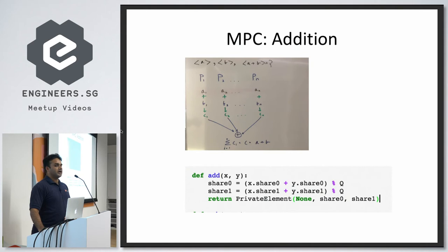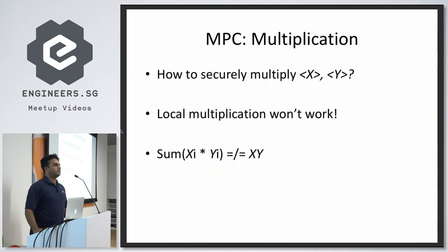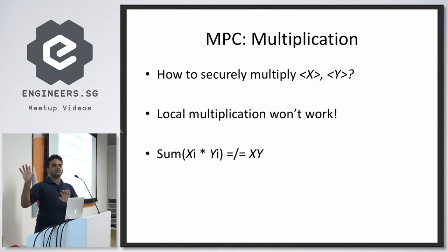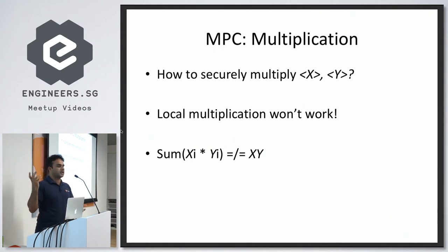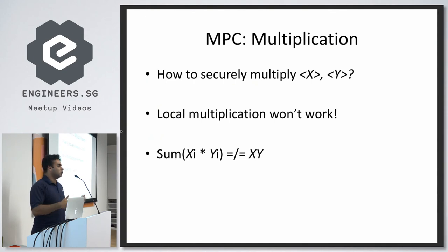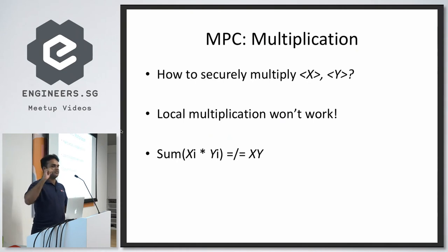Addition is simple — now we're left with multiplication. If you have secret-shared X and Y, how do you compute X times Y? This is the most intricate part — you can't just do local multiplication the way you did local addition, because if you multiply the individual splits and add them up, the result won't be the product of the two whole numbers.